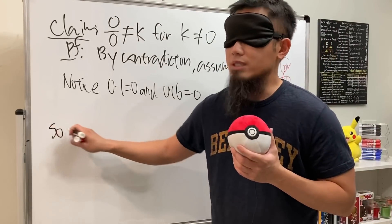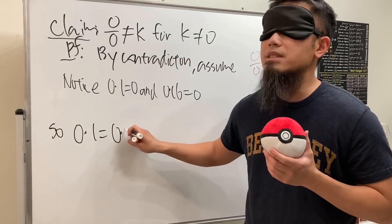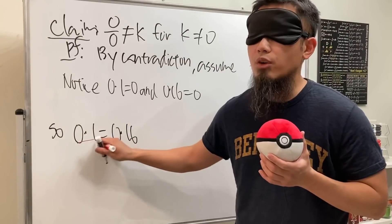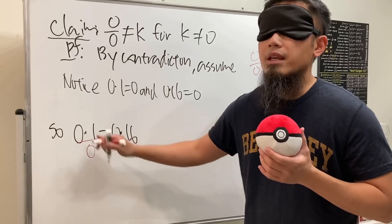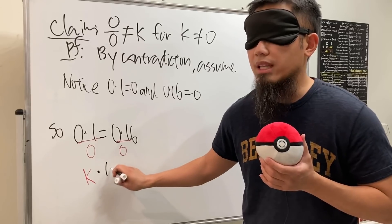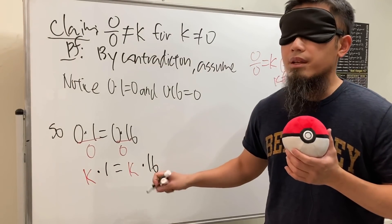So we know, of course they have to be equal to each other. So zero times one has to be the same as zero times 16. And because we have zero over zero, we can of course put this over zero. Likewise this zero over zero, by our assumption is equal to k. So we have k times one on the left hand side and on the right hand side we have k times 16.